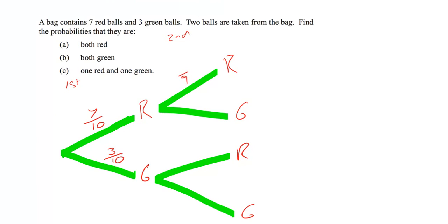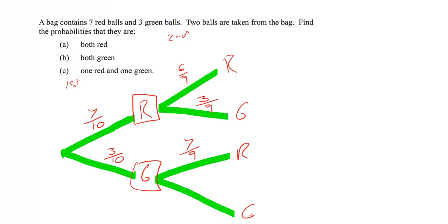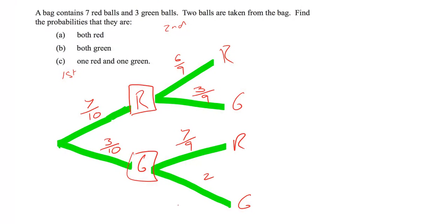All the probabilities on the second draw are going to be out of nine. If we picked red first, having removed one of the original seven reds, there are six out of nine reds left and three out of nine greens. If we picked green first, there are seven out of nine reds left but only two out of nine greens, because we picked one green first.